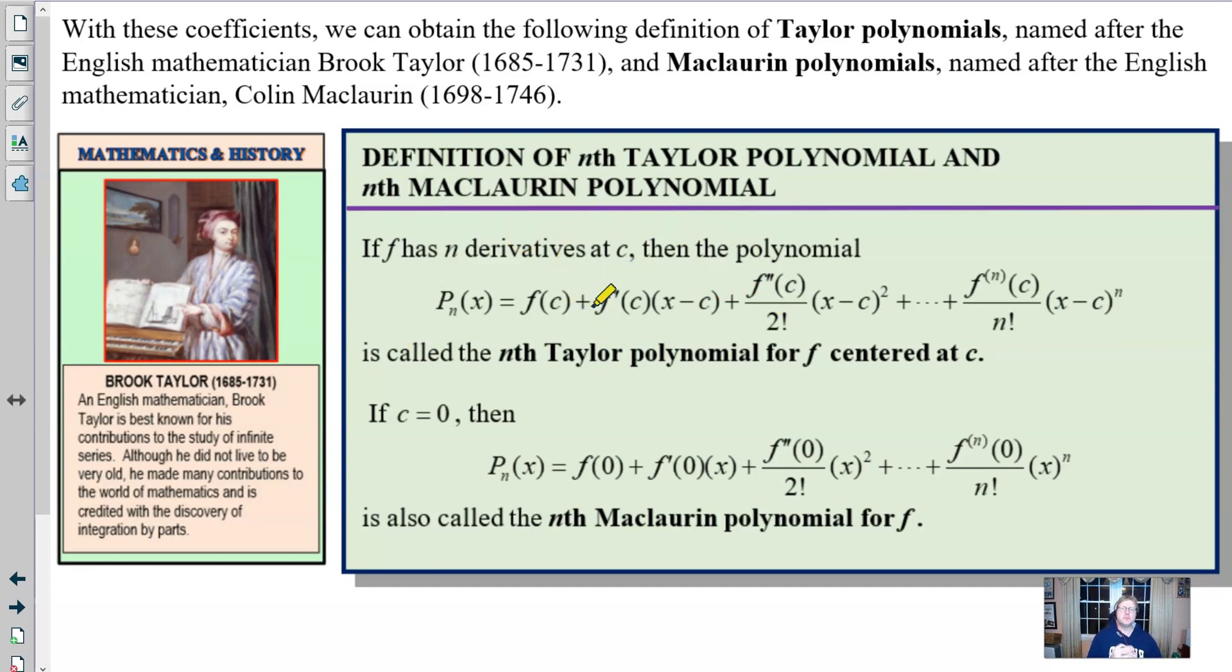Now, if you're wondering, what's the difference between a Taylor and a Maclaurin polynomial? The Taylor polynomial is centered at some value C. But the Maclaurin polynomial is very specifically centered at 0. It seems kind of silly that there's another name for one that's centered at 0. But if you ever called a polynomial centered at 0 a Taylor, it's technically okay. And I've got a little bio there for Brooke Taylor, English mathematician, best known for his contributions to the study of the infinite series. He is the man who first developed integration by parts, which is a fun known fact.